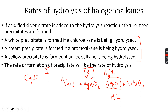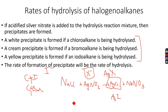This is followed by the C-Br bond in bromoalkanes. This is slightly slower than the iodoalkane reaction because the C-Br bond is stronger than the C-I bond, so it takes more time to break. Therefore, the cream AgBr precipitate forms more slowly than the yellow AgI precipitate. Then C-Cl is the slowest among common haloalkanes — because the C-Cl bond is very strong, it takes more time to break, and the white AgCl precipitate forms very slowly.